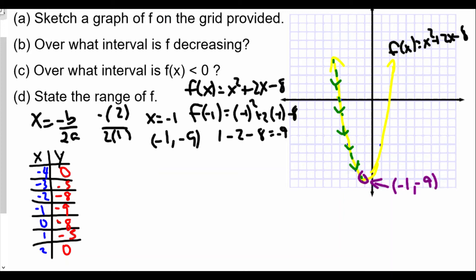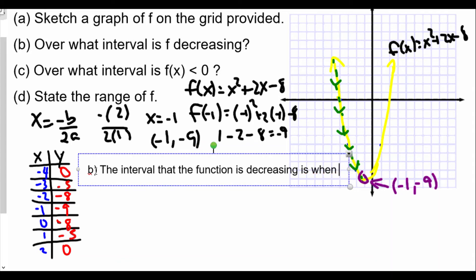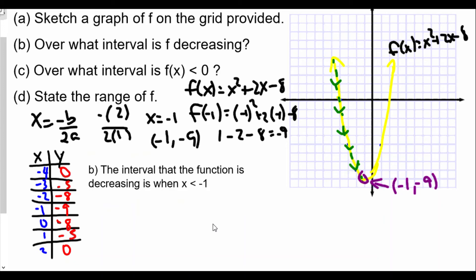Part B, the interval that the function is decreasing is when x is less than -1. Now, why is that? Well, for all values of x less than -1, the graph is always going to go lower and lower and lower. However, afterwards, after x equals -1, it's going to go higher. So it's going to be increasing.